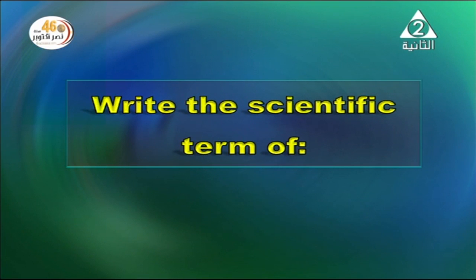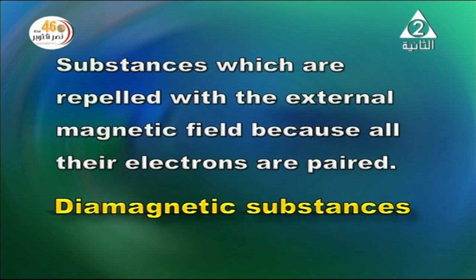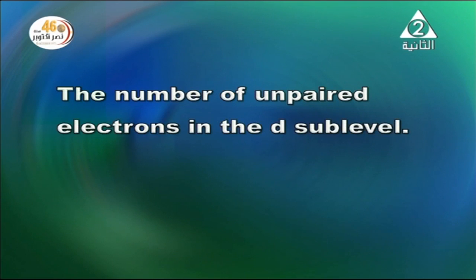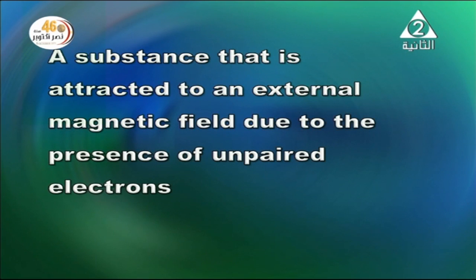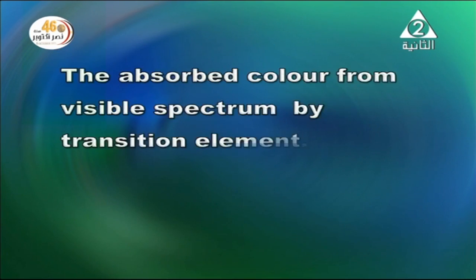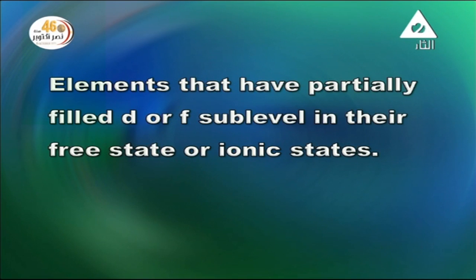Scientific terms: A substance repelled by an external magnetic field because all its electrons are paired = diamagnetic substance. The number of unpaired electrons in the D sub-level = magnetic moment. A substance attracted to an external magnetic field due to unpaired electrons = paramagnetic substance. The absorbed color from the visible spectrum by a transition element = supplementary color. The reflected color = complementary color. Elements with partially filled d or f sub-levels in free or ionic state = transition elements.